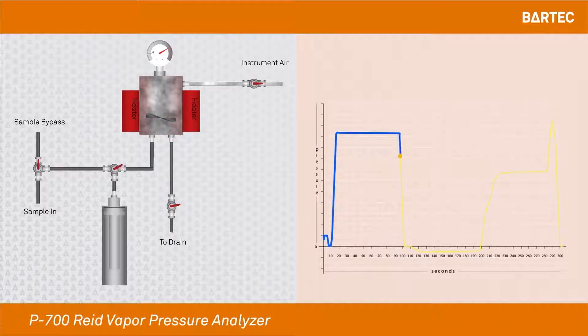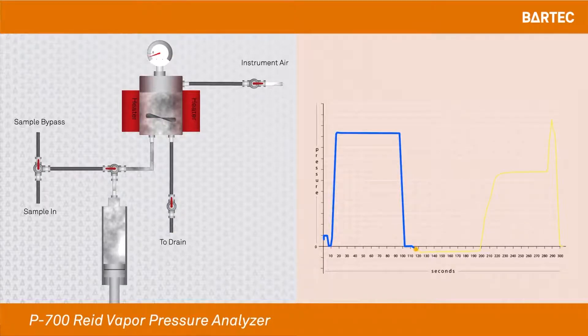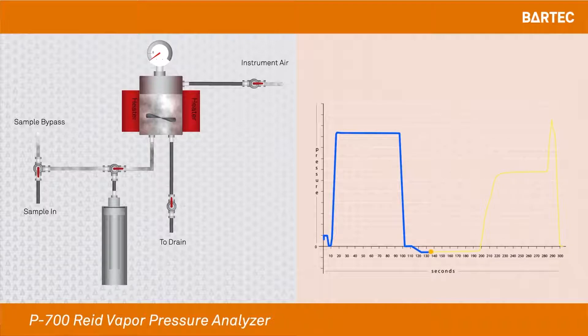We will then open the instrument air to purge any remaining liquid that might be left in the cell. Once the cell is purged, we will then remove one-fifth or one part of the volumes in order to prepare the cell for the 4 to 1 ratio needed to do the RVP measurement.